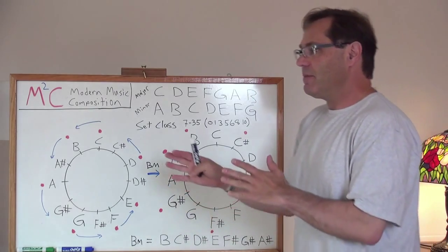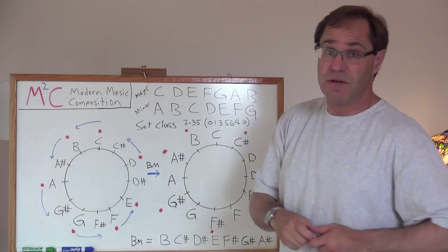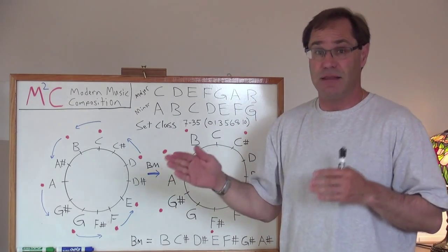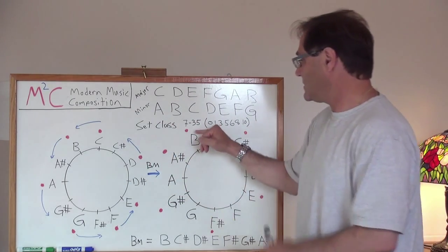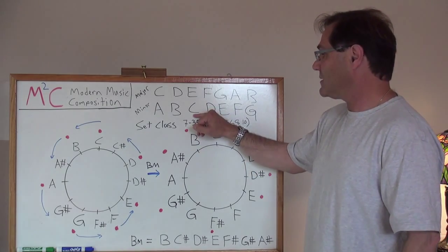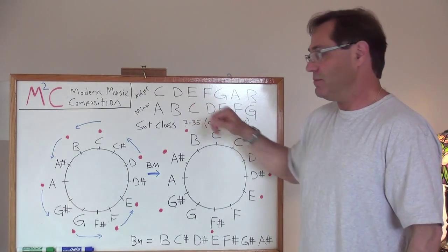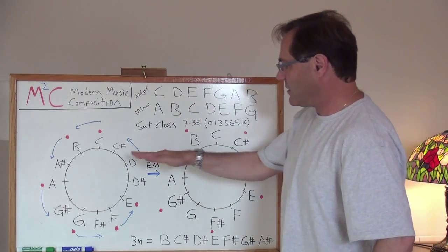So, I put this video together specifically to explain that that's not the case. Set 735 is not just associated with tones that are the same and different permutations of them. So, I put together this example.